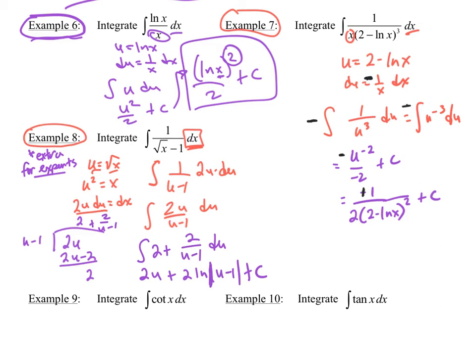Now I do want this back in x. And so all I got to do is replace the u's with my x values now. So here's what I'm left with. 2 square root of x plus 2ln absolute value of square root of x minus 1 plus c.